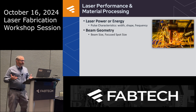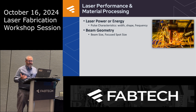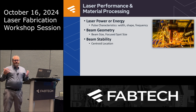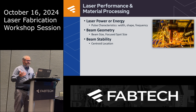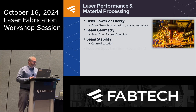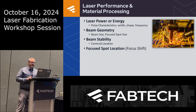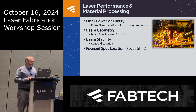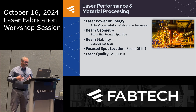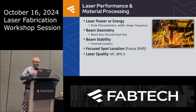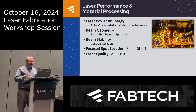Beam geometry is of interest to many people — the beam size at the process, otherwise known as the focus spot size, and beam stability: is the laser beam remaining in the right spot with the centroid stable in X/Y? There's also the Z factor — focus spot location — and whether you have focus shift due to thermal effects. There are laser quality parameters such as M², BPP, and K, which tell you how focusable the beam is. Single-mode lasers have an M² around 1.1–1.2, while multi-mode lasers can have M² values of 5 or 10.